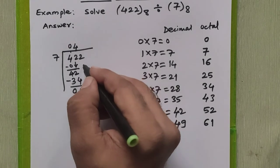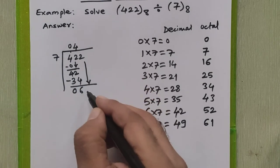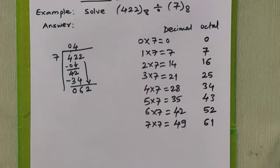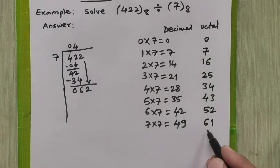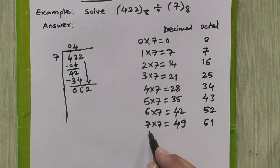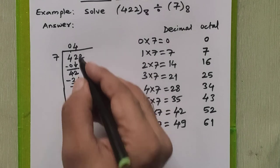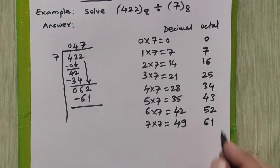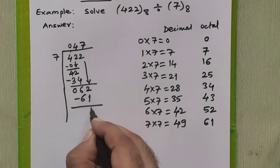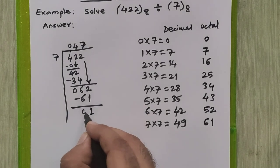And now we will refer the octal table. So 61 can be subtracted. It is 7 times 7 in octal, 7 times 7 is 61 in octal. We subtract this, we will get 1 here and 0 here. Now there are no further digits for division. It means our division came to an end. This is the quotient, this is the remainder for this division.